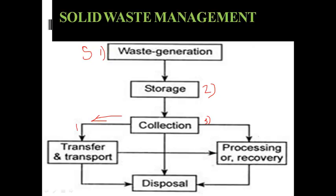There are different conditions in the flowchart. First chance: direct disposal after collection. Second chance: transfer and transport to a processing or recovery facility. Third chance: after recovery, the material goes to disposal. This is the overall process followed in solid waste management — collection, possible processing, and final disposal.